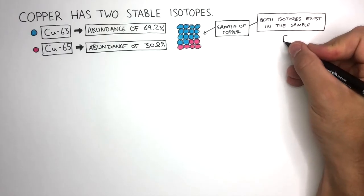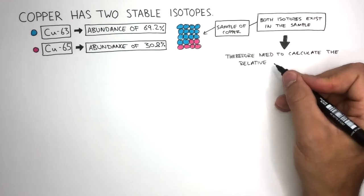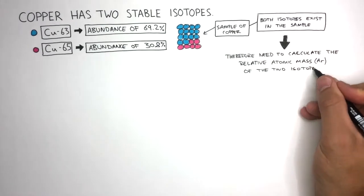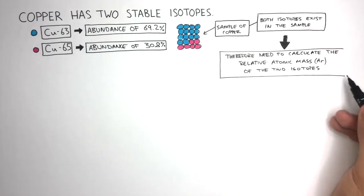Having two atomic masses of each isotope in the periodic table for copper would be very confusing, considering all samples of copper contain these two isotopes. Therefore, we need to calculate the relative atomic mass of the two isotopes to gain an average mass that we can put in the periodic table.